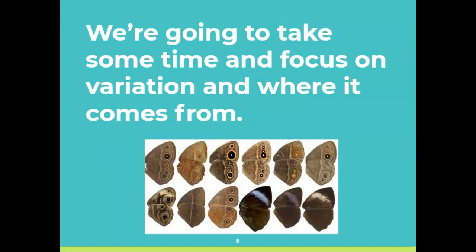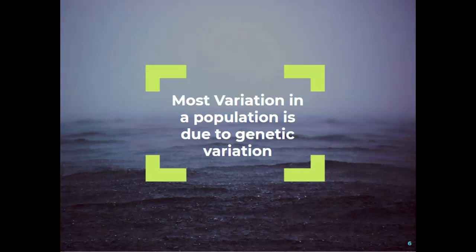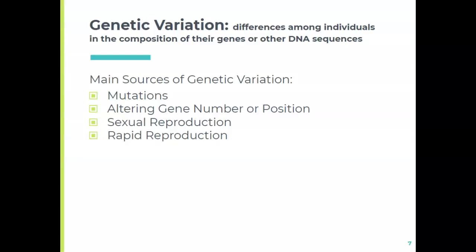We're going to focus on variation and where it comes from. Most of the variation we see amongst individuals is due to genetics — literally just differences in the ATCG order in the DNA sequence in genes is what causes things like blue eyes versus brown eyes. We get these different genetic variations from mutations, from genes switching position, from sexual reproduction, and from fast reproduction.